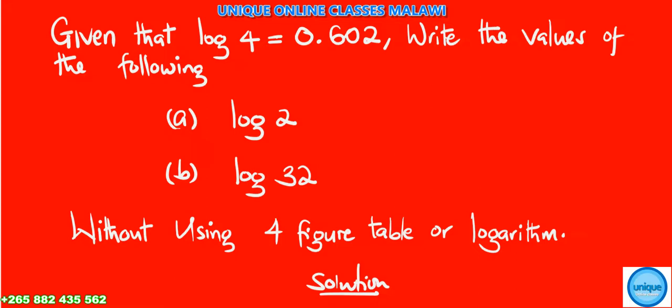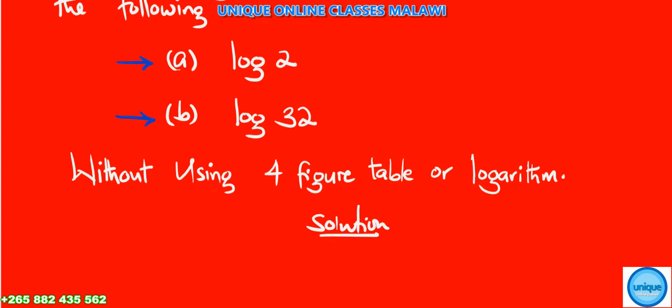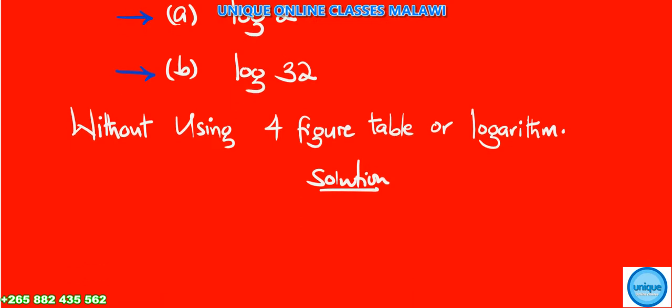Let's see how we can solve this problem. We are given that log of 4 is equal to 0.602. Write down the values of the following: (a) log of 2, so look at 32, without using four-figure tables or logarithm tables. We need to find a solution.